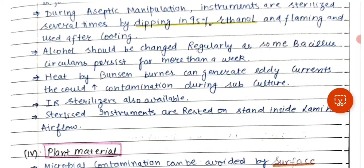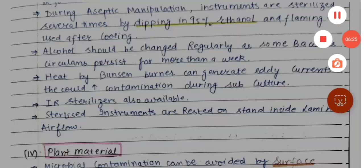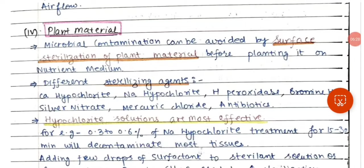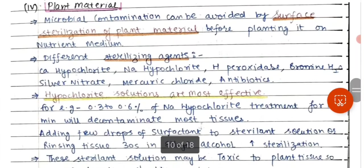Infrared sterilizers are also available. Sterilized instruments are rested on a stand inside the laminar airflow. Next is sterilization of plant material. Microbial contamination can be avoided by surface sterilization of the plant material before planting it on the nutrient medium. The explant is pre-sterilized to remove all microorganisms so that there is no contamination in the culture.